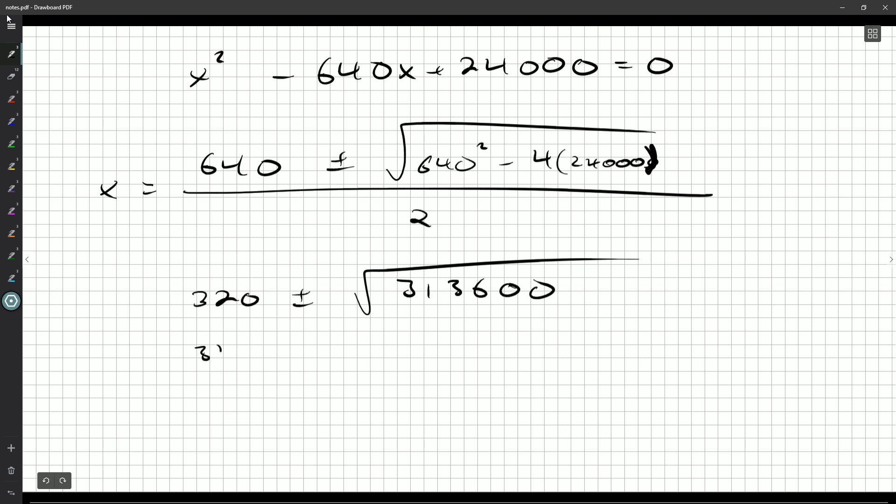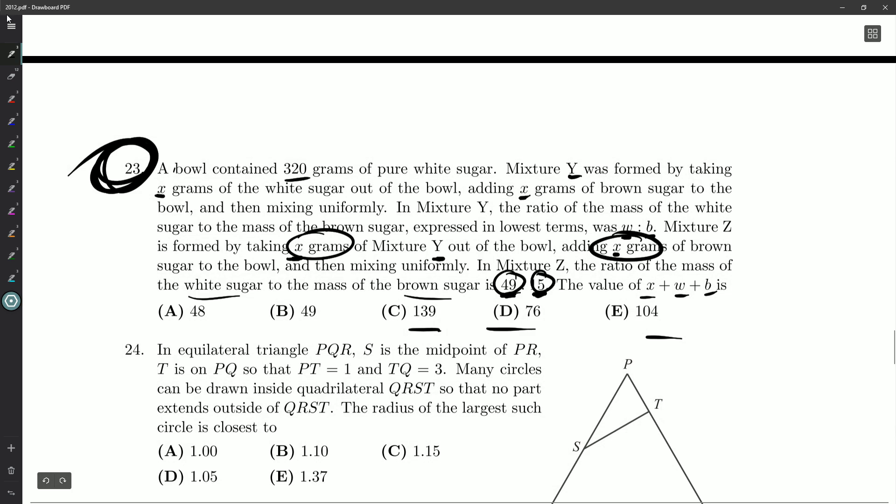409,600 minus 4 times 24,000. 313,600. Does that have a nice square root? I feel like it doesn't, but... Oh, yeah, 560. So, 320 plus or minus 560. Well, 560 over 2, so I gotta divide that by 2, 280. Okay? So, X is either 40, if you subtract, or something way too big, 600. Obviously, it can't be 600, because what do we do in the actual question? You have 320 grams, and you remove, how would you remove 600 grams if you only have 320 total? So X has to be 40.